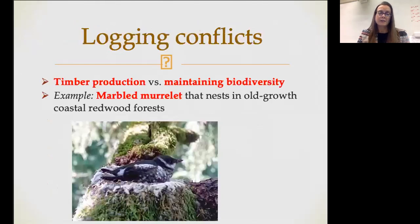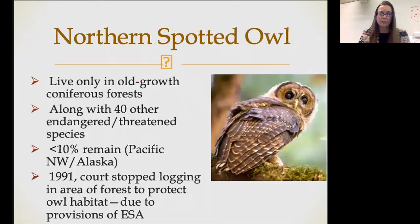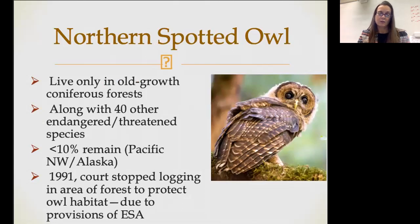Logging conflicts are probably one of the best known environmental conflicts — a long standing conflict because it basically pits timber production against maintaining biodiversity. One example is the marbled murrelet, which nests only in old growth coastal redwood forests. When we cut down redwood forests, we destroy its entire habitat — it is a specialist, so it can't go anywhere else. Similarly, the northern spotted owl lives only in old growth coniferous forests in the Pacific Northwest and Alaska. Less than 10% of the northern spotted owl population is remaining. In 1991, a court stopped logging in an area of forest to protect the owl's habitat due to the Endangered Species Act.